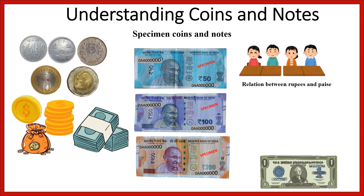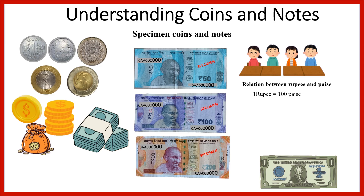Here is a helpful table to understand the relationship between rupees and paisae. 1 rupee is equal to 100 paisae. 4 twenty-five paisae coins is equal to 1 rupee, that is 100 paisae. 2 fifty paisae coins is again equal to 1 rupee, which is 100 paisae.